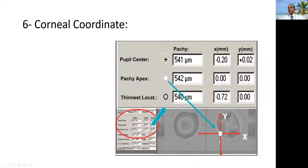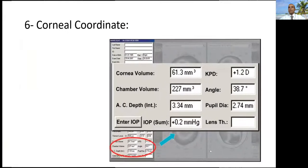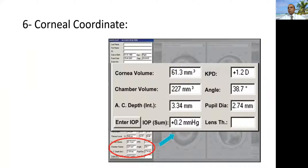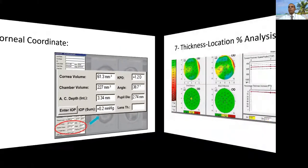Corneal coordinates we have mentioned before. The most important key is the Y, the vertical band. When you see the Y coordinate, the thinnest location is deviated downwards and nasally, you should suspect this examination. Again, corneal coordinates show corneal volume, chamber depth, and could calculate IOP if there is refractive surgery on the cornea and you want to know what is the real IOP for that patient.